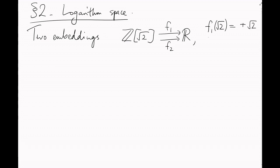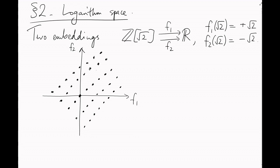f1 sent root 2 to root 2, and f2 sent root 2 to minus root 2. By embedding it in both simultaneously, we regained our original lattice picture, but this time inside an honest geometric space.